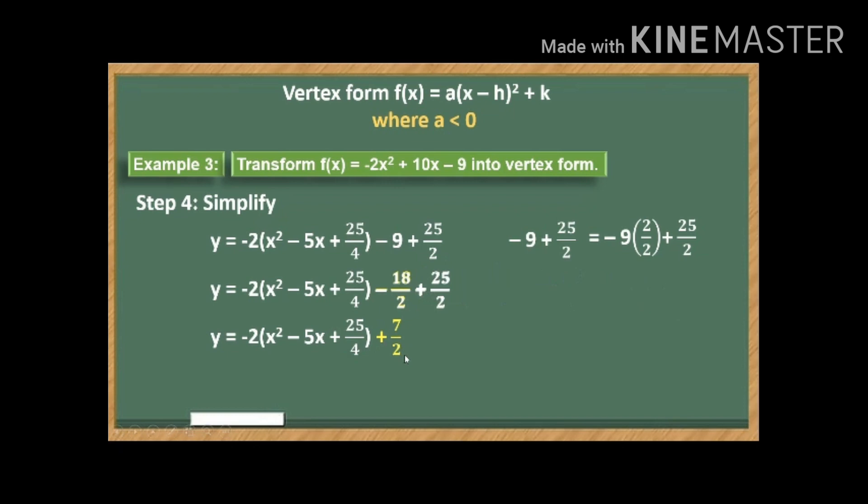How about positive 7 over 2? So negative 18 plus 25 all over 2 since they have the same denominator. So we have this negative 18 plus 25 all over 2. So that is simplified to positive 7 over 2. That's what we are adding here. I hope you were able to follow.